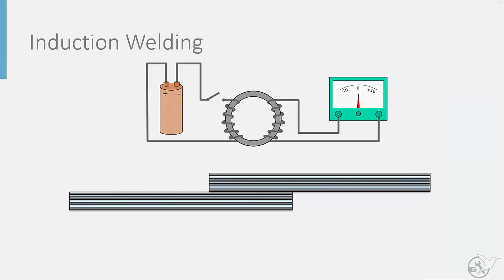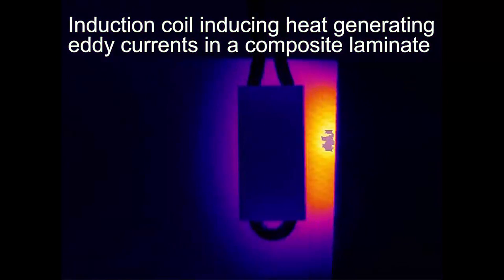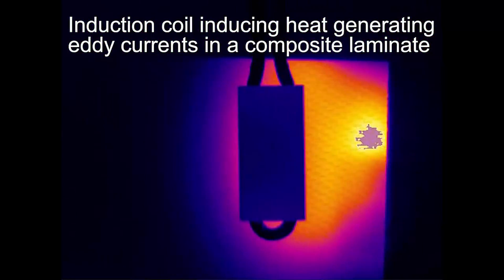Here we see a schematic of the induction welding process. By applying an electrical current to an induction coil, a magnetic field can be induced which will cause heat generating eddy currents within the carbon fibers inside the composite material. This heat will melt and fuse the thermoplastic resin between the parts, generating the final weld line.